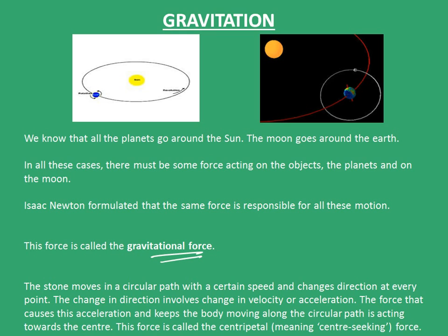Let's take an example which we had taken earlier. The stone moves in a circular path with a certain speed and changes its direction at every point in the experiment where we had tied a stone to a thread and we whirled it around in a circle holding the other end. The change in direction involves a change in velocity or acceleration. The force that causes this acceleration and keeps the body moving along the circular path is acting towards the center. This force is called the centripetal force, meaning the center seeking force.